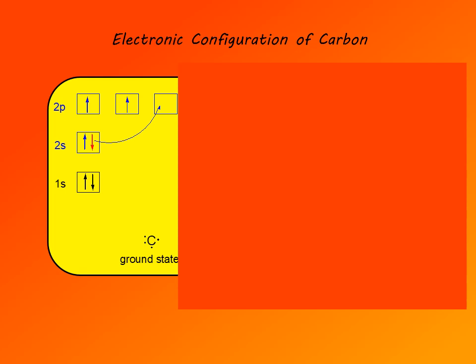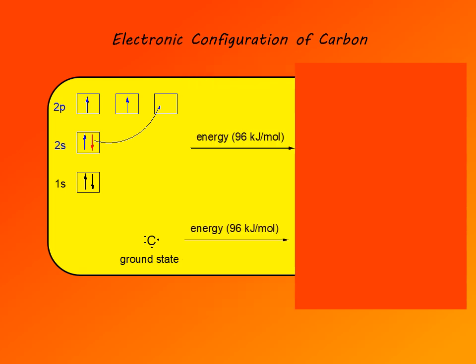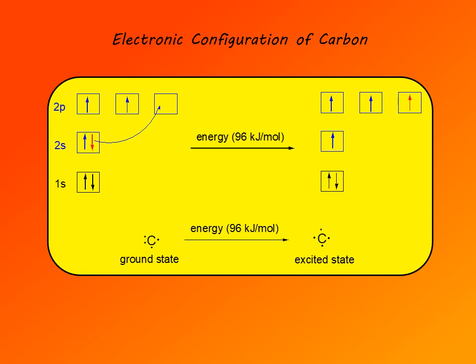Carbon cannot form alkane from its ground state electronic configuration. The first physical phenomenon that happens in the course of bond formation is promotion of an s electron to a p electron, and that requires energy of 96 kilocalories per mole. Such promotion results in 4 unpaired electrons.